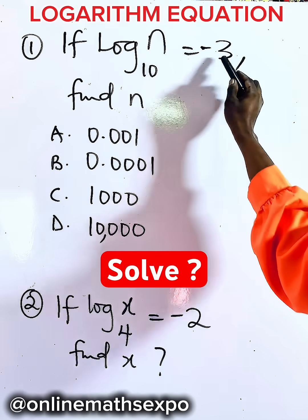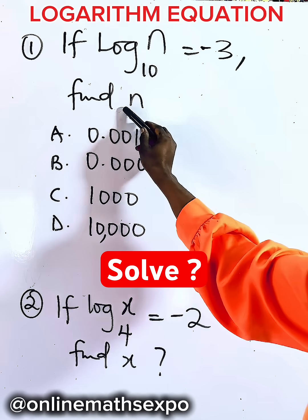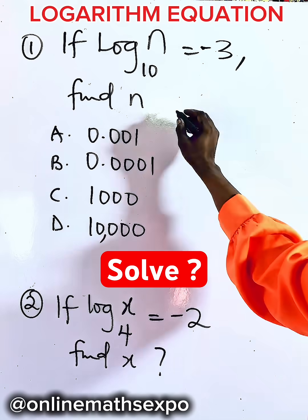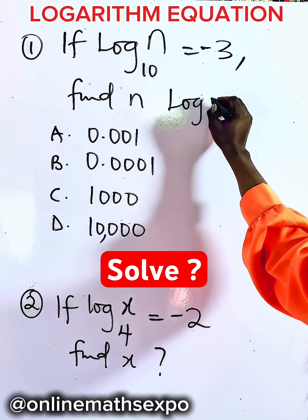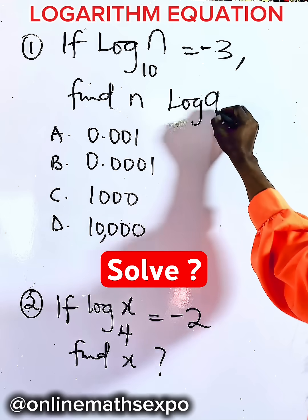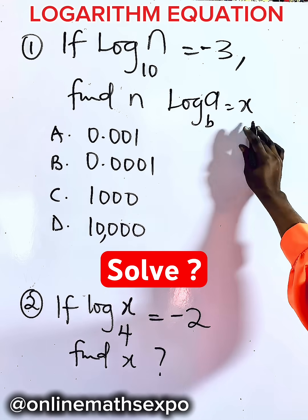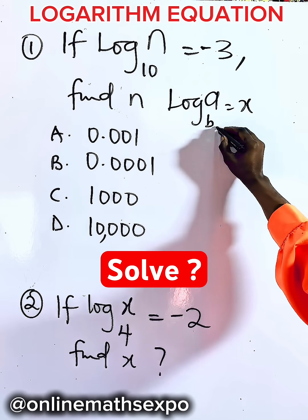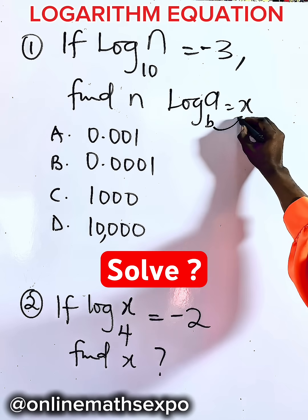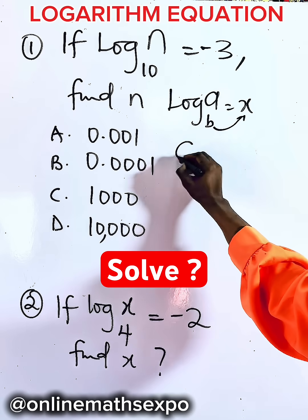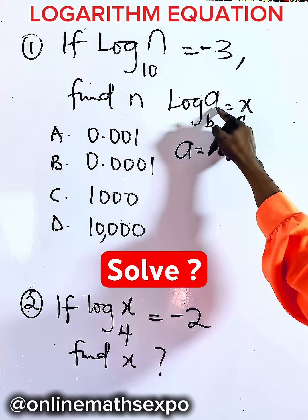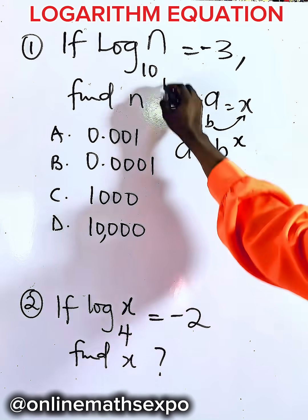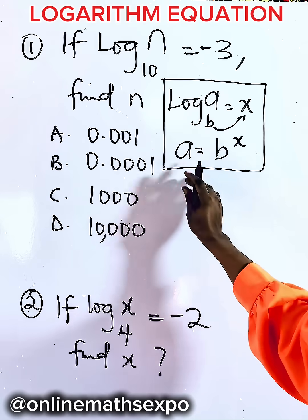If log base 10 of n is negative 3, what is n? To answer this, remember that for every log of a base b equal to x, we turn this to indices or exponents. You raise b to the power of x, so a will be equal to b to the power of x. This is our definition of logarithm.